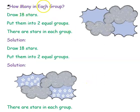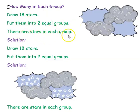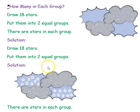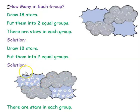Next: how many in each group? Draw 18 stars and put them into 2 equal groups. So there are dash stars in each group — you have to find how many stars in each group. What is given? Draw 18 stars and put them into 2 equal groups. Now, I have drawn and divided it into 2 groups. This is the first group and this is the second group.